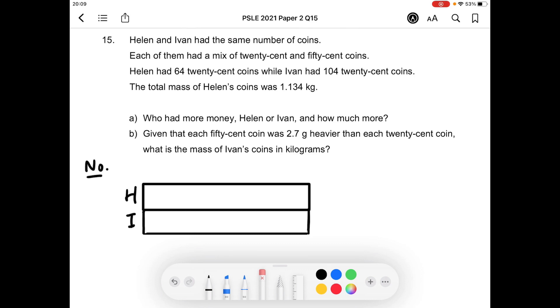Each of them had a mix of 20 cent and 50 cent coins. Helen had 64 20 cent coins. So I'm going to go to Helen and say this is 64 20 cent coins. I'm going to use a blue pen to write that 20 cent coins. And the rest in red will be the 50 cent coins that she had.